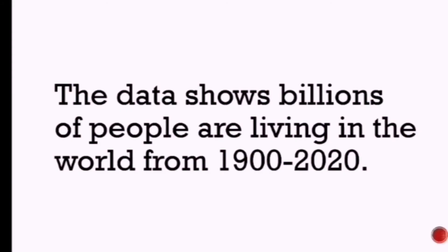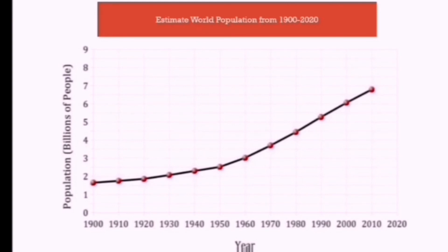For another example, the data shows billions of people living in the world from 1900 to 2020. The y-axis on the left is titled 'Population: Billions of People,' and the x-axis shows the year from 1900 to 2020. For the first question, the estimated population in 1930 was 2 billion people. For the second question, in what decade did the population increase the most — the answer is the year 2010.